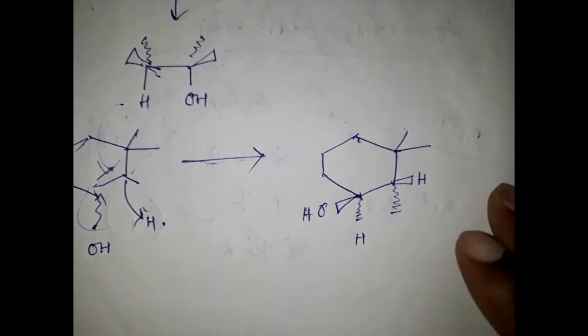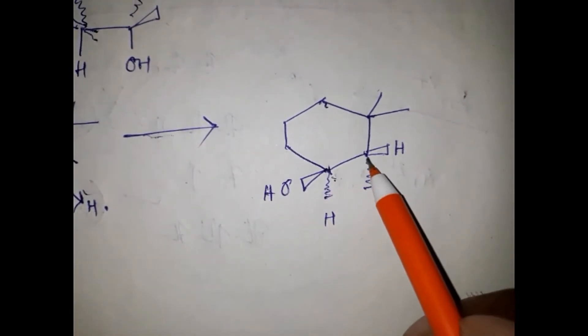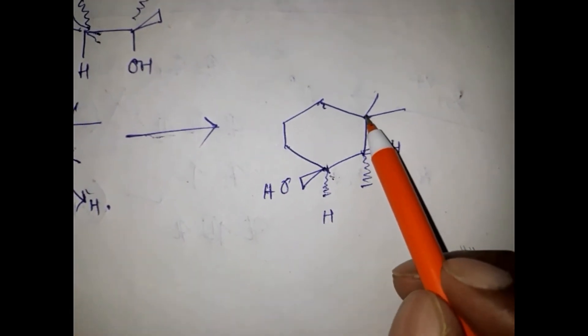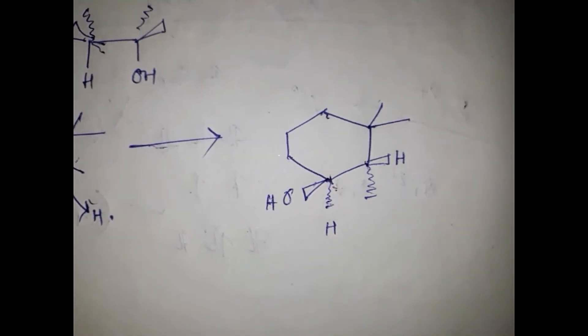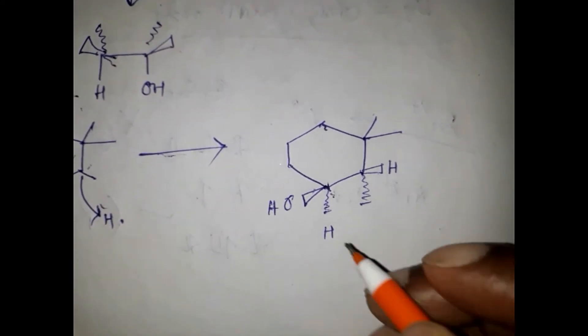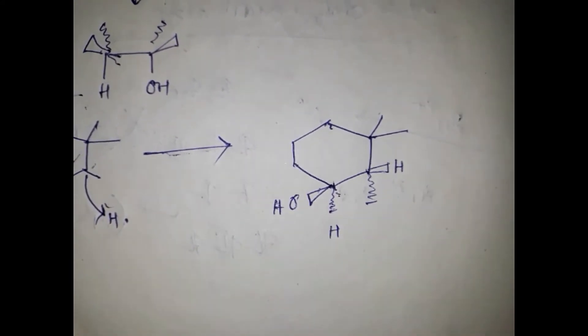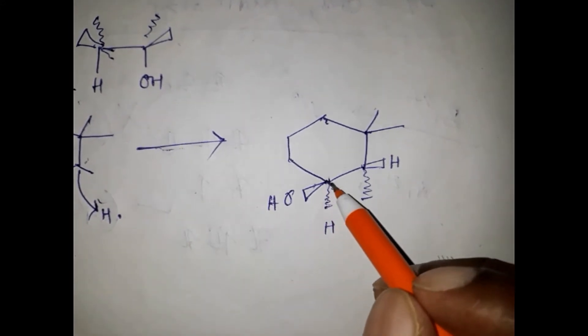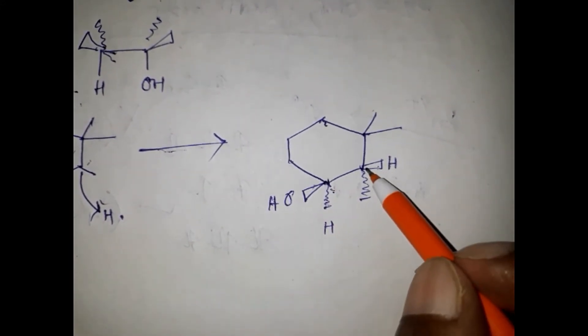So the name will be 2,3,3-trimethylcyclohexanol. But now we have to do the R/S nomenclature for those two chiral centers. These two will be assigned R/S nomenclature.